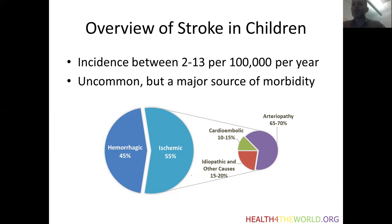About 45% of strokes in children are hemorrhagic and the remainder, about 55%, are ischemic. In this part of the talk, I'll be speaking mostly about ischemic stroke and then in the third part, mostly about hemorrhagic stroke. Among ischemic strokes in children, the predominant cause is arteriopathy — so disorders of the cervical and intracranial arteries. A smaller proportion are cardioembolic and about 15% to 20% have other causes or no identifiable cause.